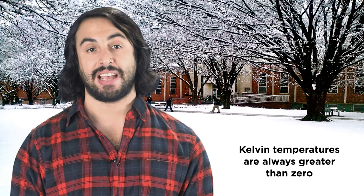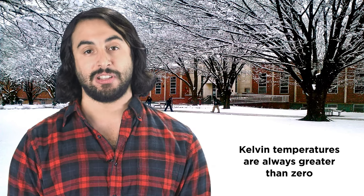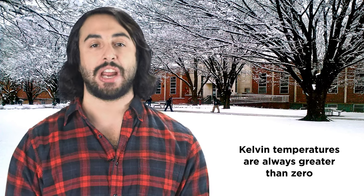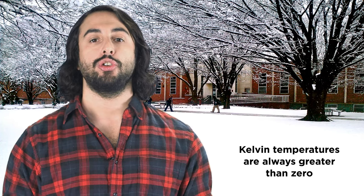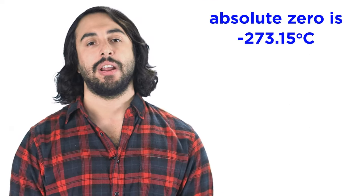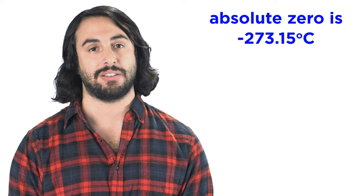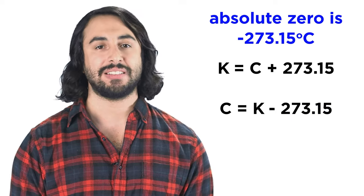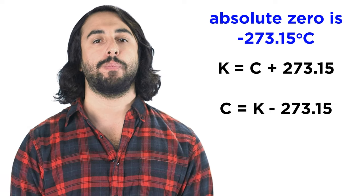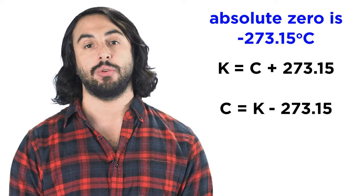We need a temperature scale that will always be positive, so that we can demonstrate the proportional change in a quantity due to temperature change. As it turns out, absolute zero is about negative 273 Celsius, which means we can use these simple equations to go between Celsius and Kelvin, which we will frequently need to do in chemistry.